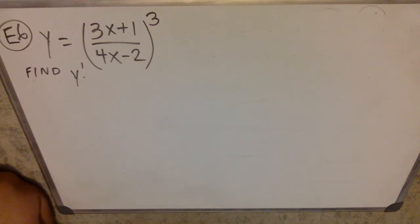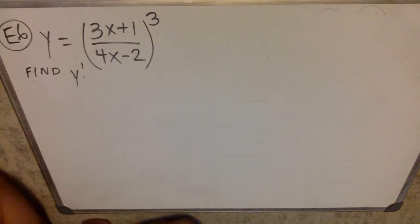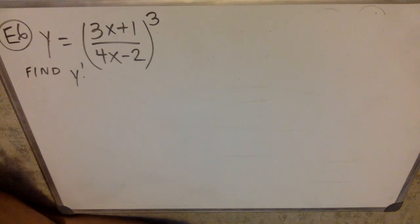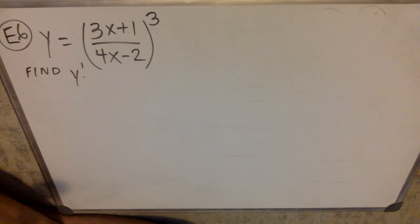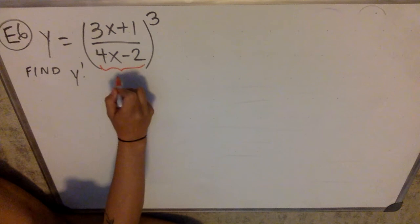We are still doing section 2.4, which is the chain rule, and we're just going to do a lot more practice. Example 6: we have this ugly quotient all inside a cube. This is definitely a chain rule. The other option is to essentially put the cube on both the numerator and the denominator and then use Pascal's triangle to foil that out, and that's going to be totally disgusting.